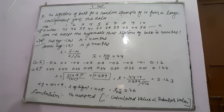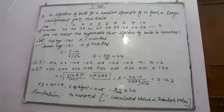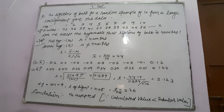So we calculate all these in the T-Test. Suppose the question is: the lifetime of a bulb for a random sample of 10 from a large consignment is given. Items 1 to 10 are listed — for example, item 1 is 4.2 and item 2 is 4.6. The question is: can we accept the hypothesis that the lifetime of a bulb is 4000 hours?